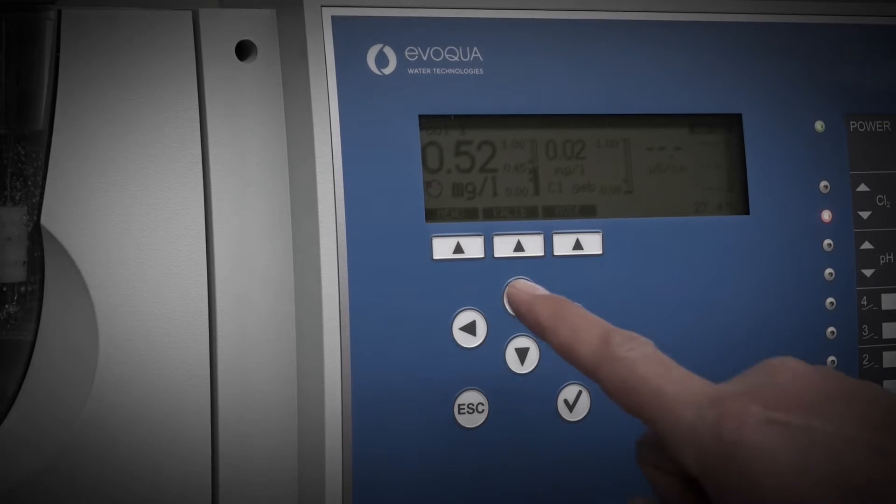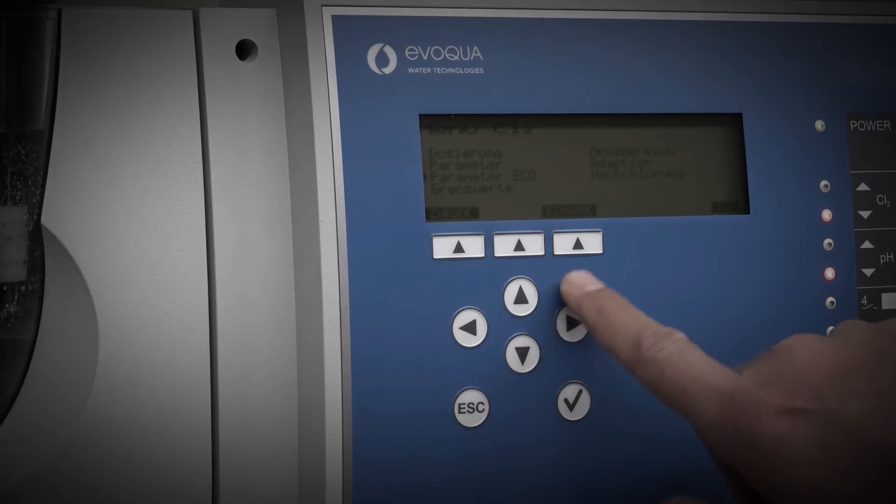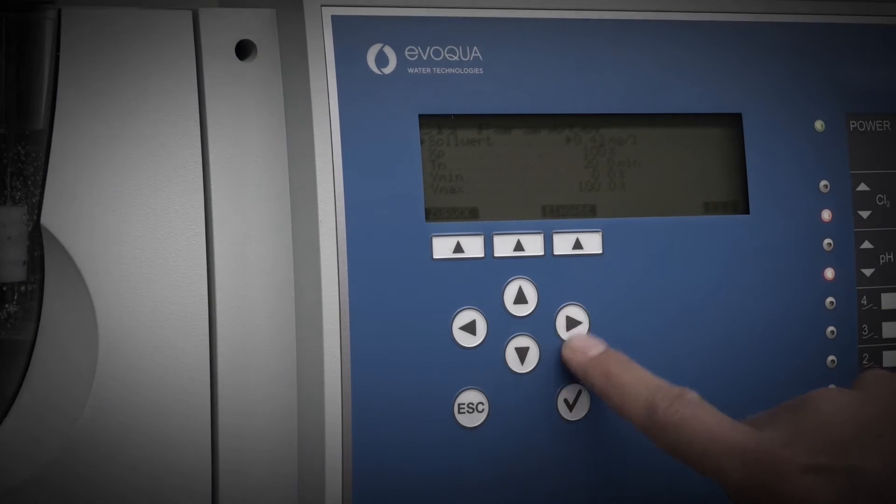In the past, the regulation and dosing of the free chlorine, for example, meant working your way step by step through various submenus using arrow keys and a simple display. Add to that the fact that the sequence was structured and definitively stipulated by the menu.